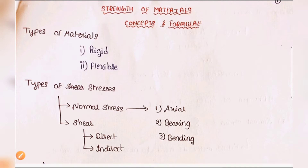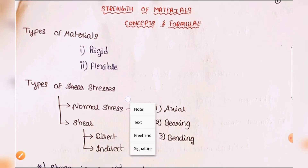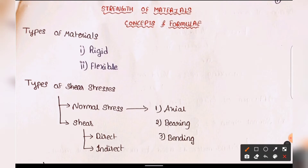First of all, strength of materials relates to which types of materials. There are two types: rigid and flexible. Rigid materials are like solid or strong objects. Flexible materials deform when a load is applied. Strength of materials is mainly related to rigid materials.